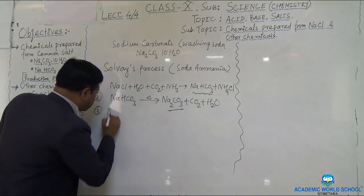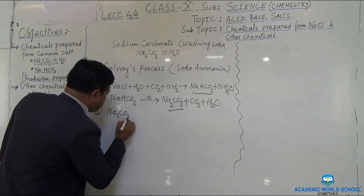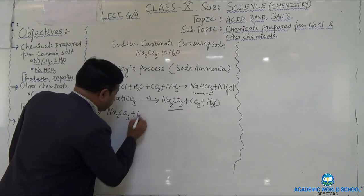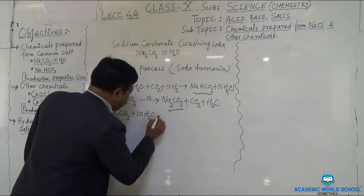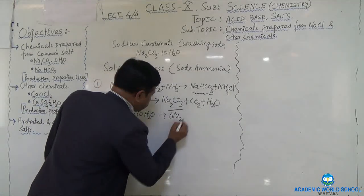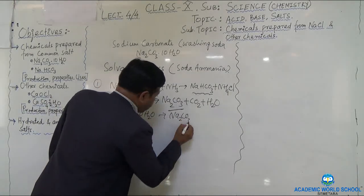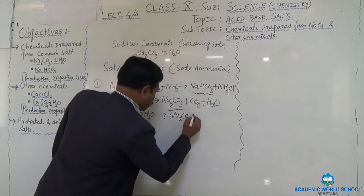The third and final step is crystallization of sodium carbonate. Na₂CO₃ + 10H₂O → Na₂CO₃·10H₂O.